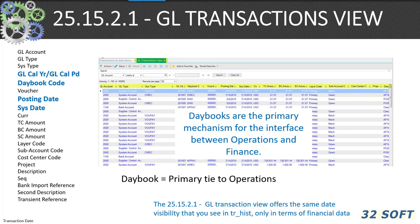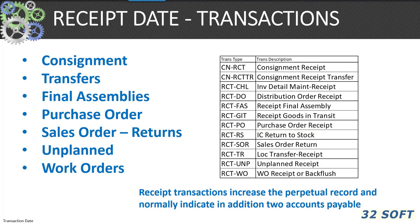The 25.15.2.1 GL transaction view gives the same visibility you see in TR_HIST, but in terms of financial data: calendar year, calendar period, daybook codes, posting date, and system dates. Day books are primarily a mechanism for the interface between operations and finance. Receipt dates in TR_HIST are recorded as RCT-XXX. You can do receipt dates for consignment, transfers, final assembly schedules, purchase orders, sales order returns, and unplanned issues.